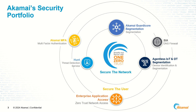Akamai Hunt uses Akamai security experts and AI to find and remediate advanced persistent threats, or APTs. Next, we secure the user by leveraging multi-factor authentication to enforce strong user authentication based on FIDO2. Secure Internet Access is a cloud-based DNS firewall that proactively protects users and devices by blocking connections to malicious content. Enterprise Application Access is a ZTNA service to provide secure access to specific applications based on user identity, context, and device posture.